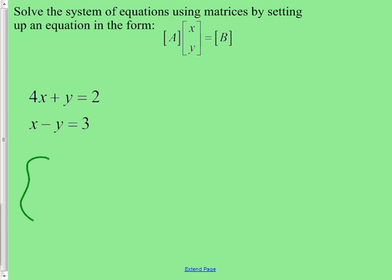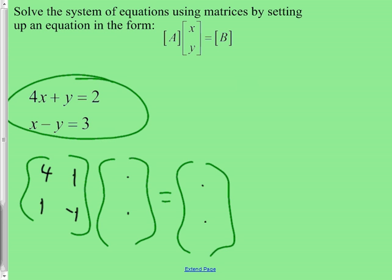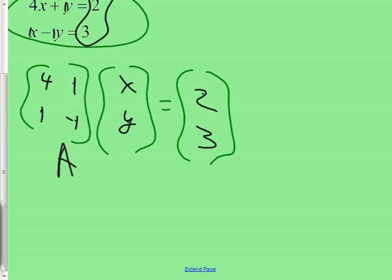This important problem asks whether you can write a matrix equation for a system of equations. There are four numbers plus two variables. Write the coefficient matrix A: the entries are 4, 1, 1, −1 — the extra 1s come from coefficients that are 1. Then the variable matrix is [x, y], and the answer matrix B is [2, 3]. Enter A and B into the calculator.